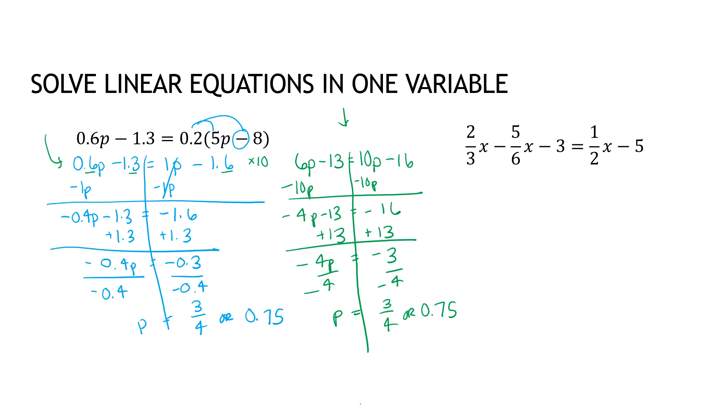Whichever way works for you, keep in mind that I took it times 10 because there was one decimal place. If I had a decimal with two decimal places, that's the hundredths place, so I would take everything times 100.